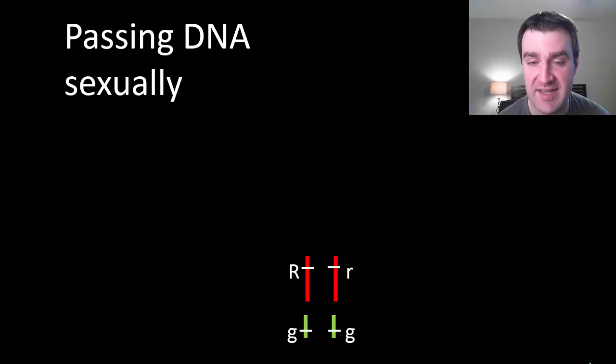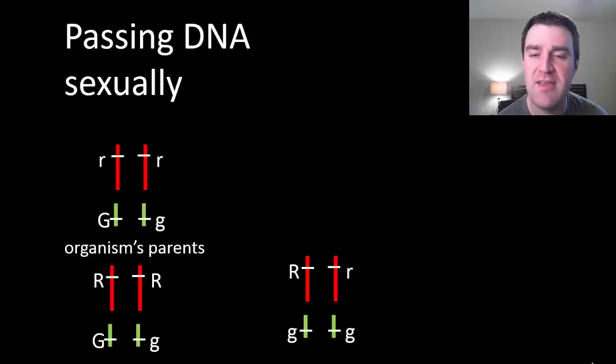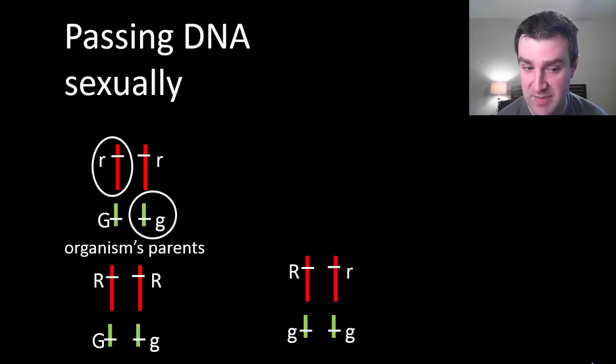Let's flip now and look at sexual reproduction. Let's say that we have our same organism from before. But what if that organism was produced sexually? Well, maybe the parents could have looked like this. Notice that each parent is a little genetically different from our current organism. That's because when they reproduce that organism sexually, they just passed on one of each of their chromosomes, one of each of their homologous pairs.